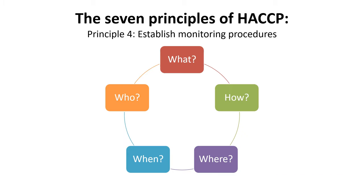Principle 4: Establish a system to monitor control of the CCP. Monitoring is a planned sequence of observations or measurements to assess whether a CCP is under control, and to produce an accurate record for future use and verification. What will you measure? How will you measure it? Can you do continuous monitoring of the control point? If not, how often will the measurements need to be performed to show that the process is under control? The monitoring that takes place at the critical control points is essential to the effectiveness of the HACCP program. The monitoring program will be made up of physical measurements or observations that can be done in a timely manner, to provide the information in a time frame that allows you to take action and control product if an out-of-control situation occurs.